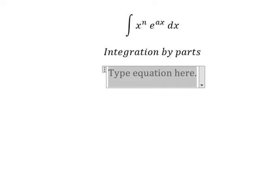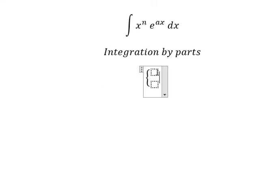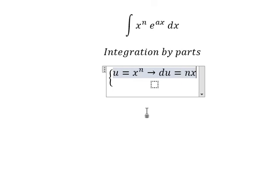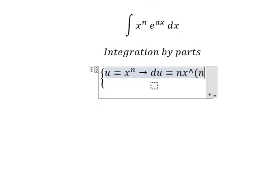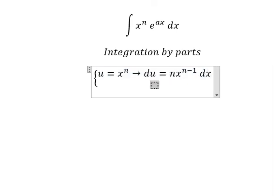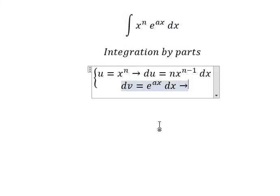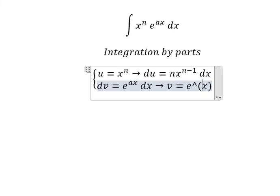I will put u equals to x to the power of n. So we do the first derivative for both sides and we have du equals n x to the power of n minus 1 dx. dv, that is about this one, so the integration of this one we have v equals to e to the power of ax over a.